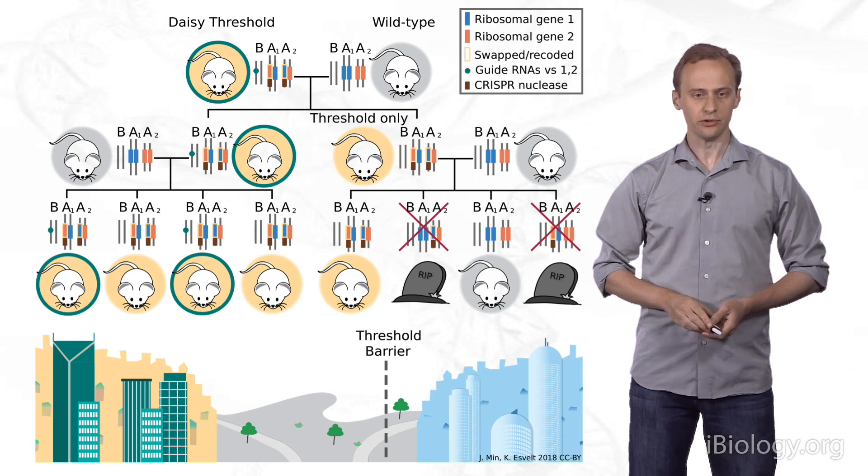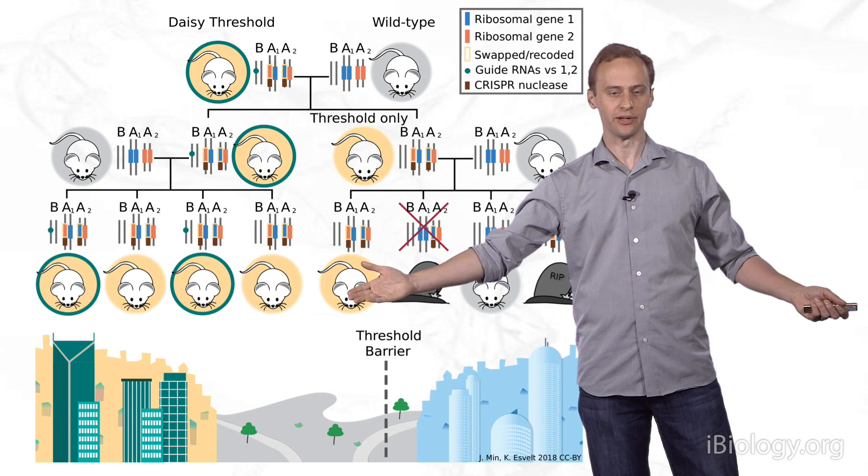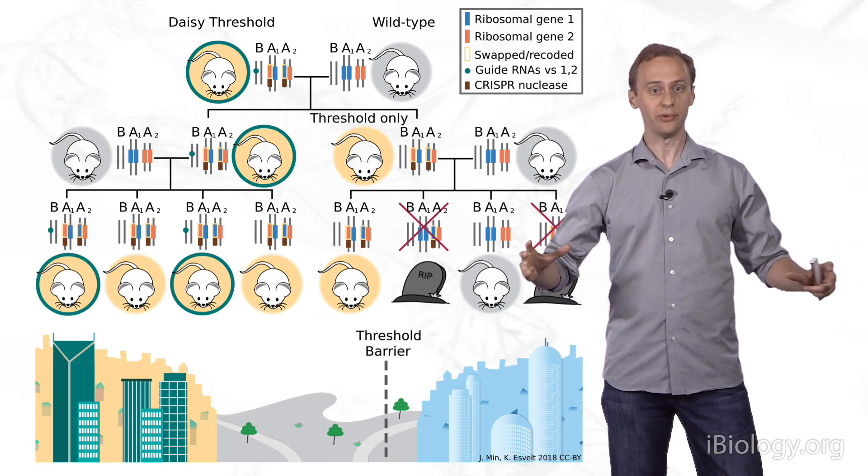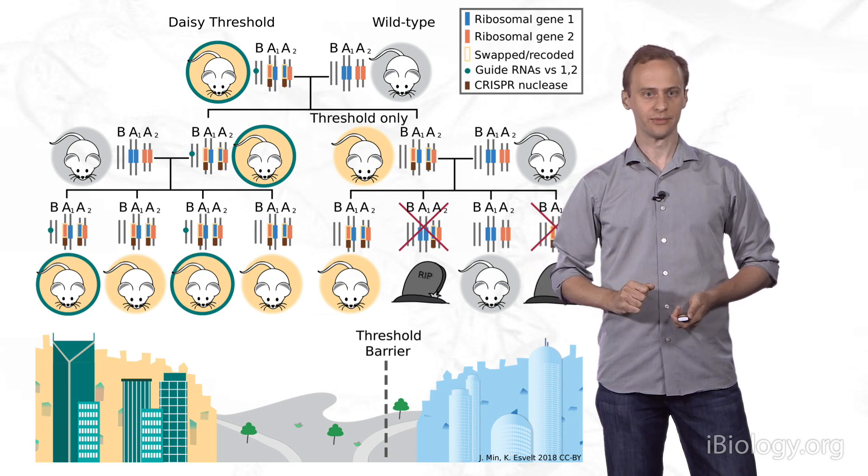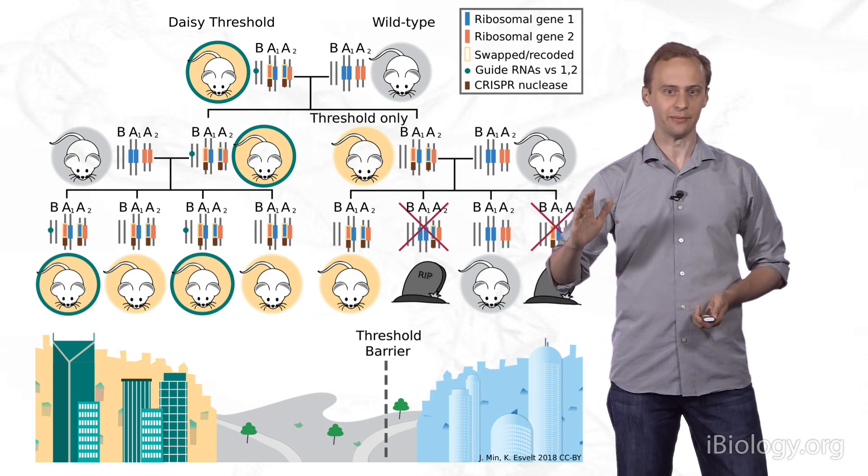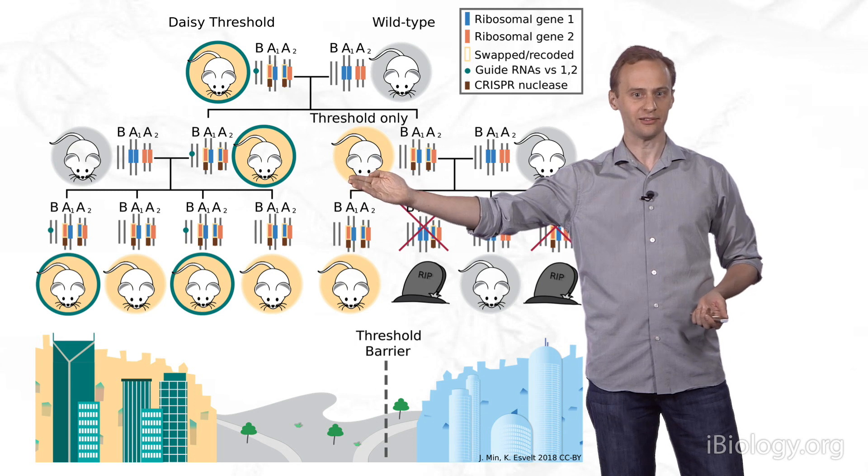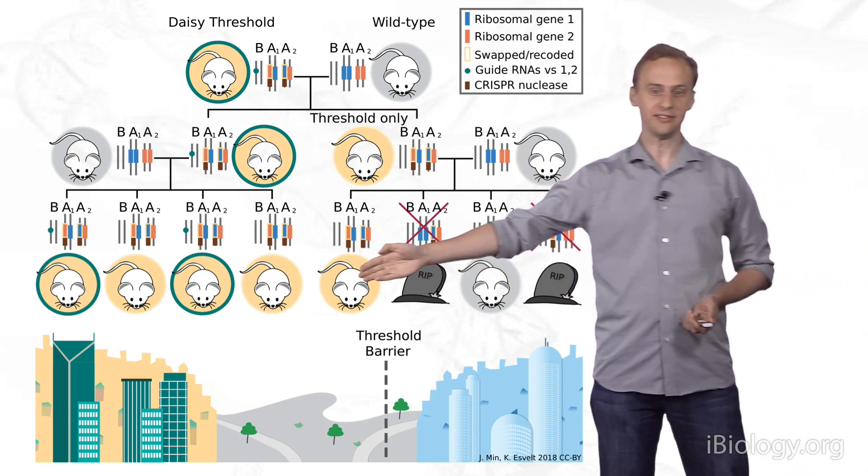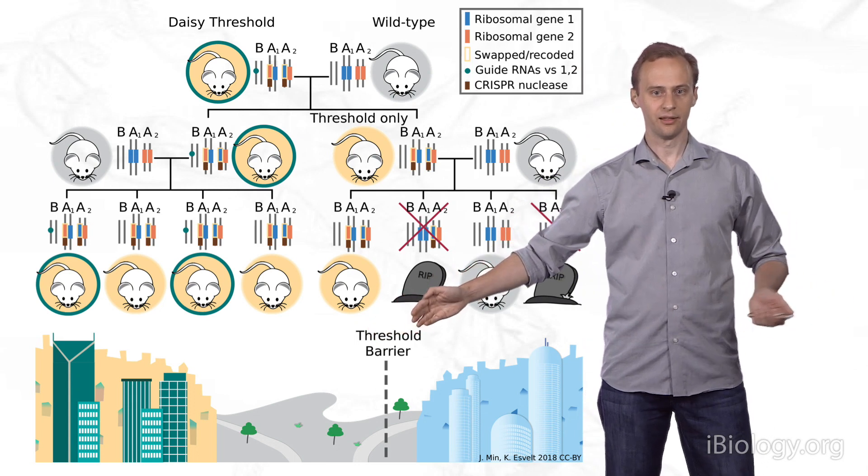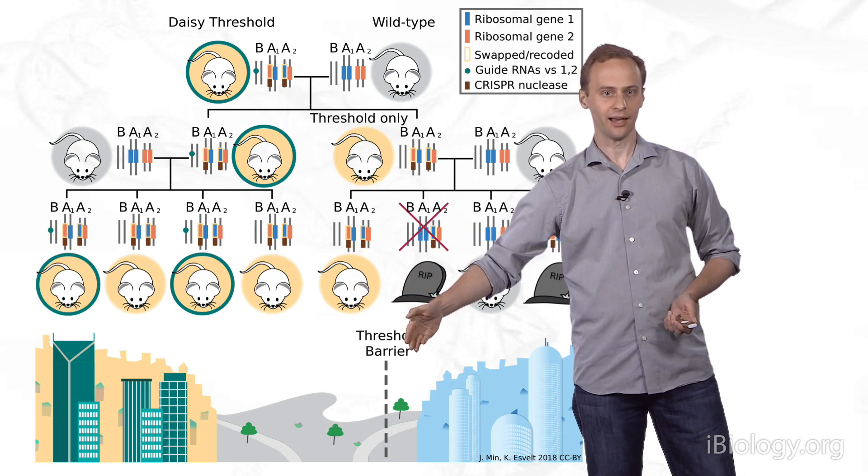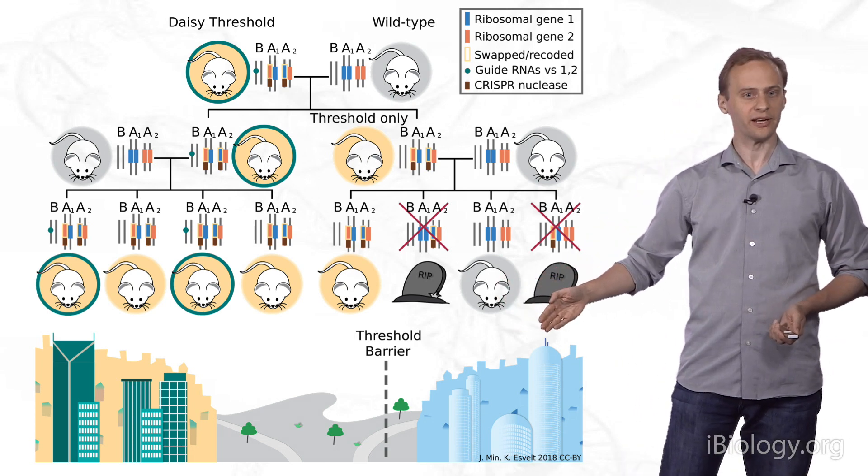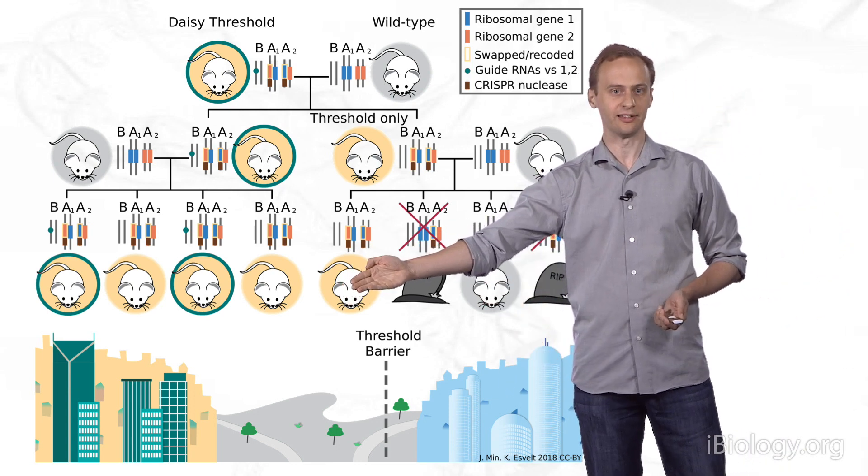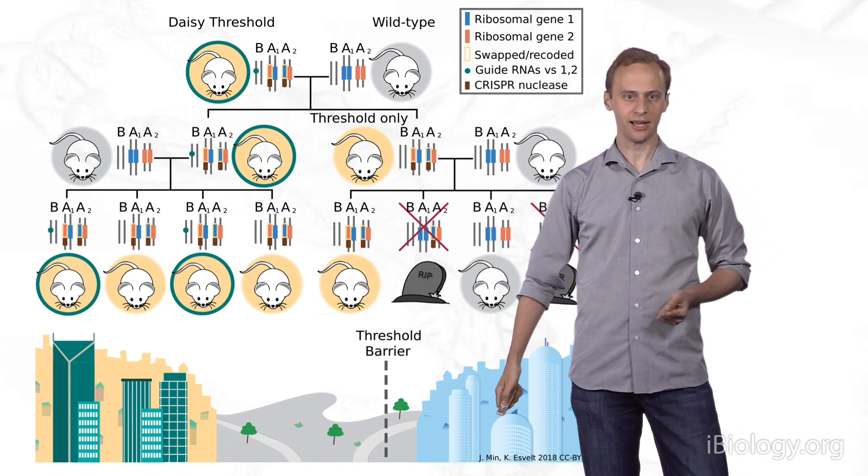The net effect is to create a threshold system that can be spread using a DAISY. Here the idea is you introduce, into a given population of a town that wants to alter its local organisms, DAISY threshold organisms in the center of town. The DAISY drive spreads the alterations through the town, towards the boundary, losing genetic fuel as it goes. And only when it runs out does the threshold switch on, because while a DAISY element is present, all of the offspring are guaranteed to inherit two swapped copies. As soon as you run out of DAISY elements, then you get the threshold effect. When the DAISY elements run out towards the edge of the town boundary, then within the town the threshold will have been exceeded, and it will actively select for the engineered variant. But in the neighboring town the engineered allele will be in the minority, and natural selection will actively eliminate it.